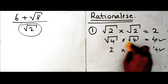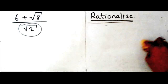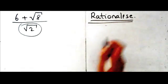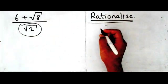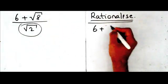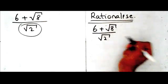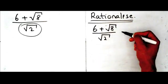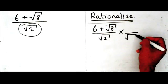Right, now let's go ahead and try to use that fact to rationalize this expression. So I've got six plus root eight divided by root two. To get rid of that square root, what I could do is multiply that by root two.